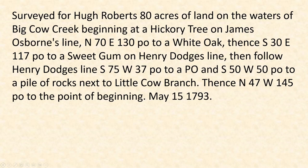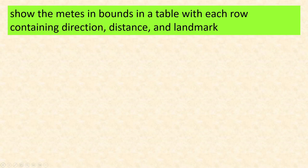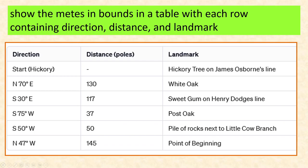Those of you who do surveying and mapping in places like North Carolina know about metes and bounds — that's how land property is described. I took one document; it was actually fictional, one I use in a class I teach, with all the metes and bounds and all the abbreviations. I told it: show the metes and bounds in a table with each row containing direction, distance, and landmark. There you go. I've also been playing around getting it to put output in a format I can plug into a program called DeedMapper, and it will actually draw the outline of the property.